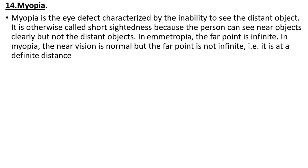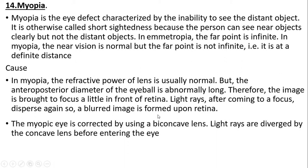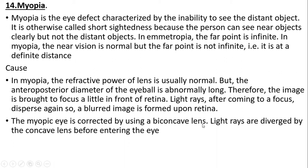Myopia: myopia is the eye defect characterized by inability to see distant objects, otherwise known as short-sightedness. In myopia, the far point is not at infinity — near vision is normal, but the far point is at a finite distance. The cause: the refractive power of the lens is usually normal, but the anteroposterior diameter of the eyeball is abnormally long; therefore, the image is brought to focus in front of the retina. The light rays, after coming to a focus, diverge again, so a blurred image is formed upon the retina. The myopic eye is corrected by using a concave lens — light rays diverge through the concave lens before entering the eye.